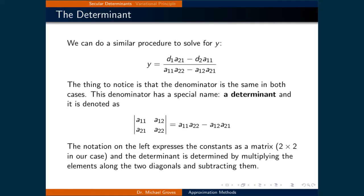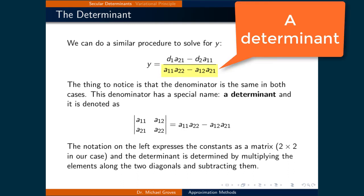A similar procedure can be done to solve for y, giving y equals (d1a21 minus d2a11) over (a11a22 minus a12a21). In both solutions, the denominator is the same. This denominator has a special name called a determinant.